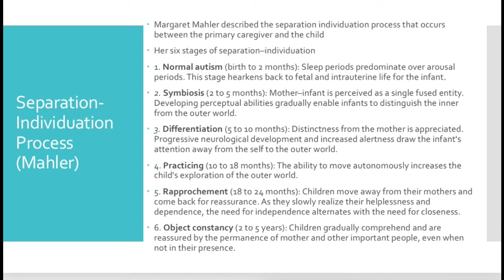In the fifth stage, rapprochement, from 18 to 24 months, children move away from their mothers and come back for reassurance. The child will go out, do their own thing, play a little bit, and then come back to reassure themselves that the mother is still there. They are still dependent at this point but are realizing they can have more independence.